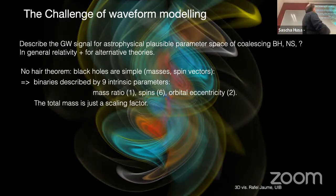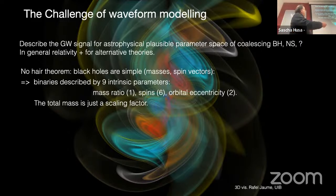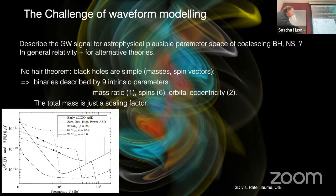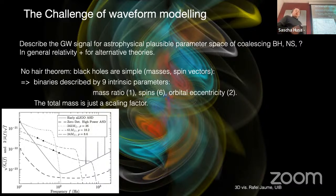Binaries are described by only nine intrinsic parameters: the mass ratio, the two spin vectors, and two more parameters for the orbit like eccentricity. The total mass in GR for black holes is just a scaling factor, so we can ignore it for modeling but it's very important for data analysis. This plot shows the power amplitude density sensitivity for the initial LIGO and advanced LIGO detectors, and three gravitational wave signals that differ only by their mass — smaller masses shift to higher frequencies, larger masses to lower frequencies.